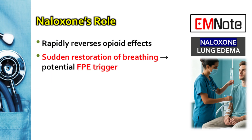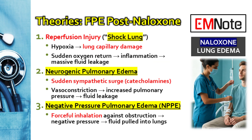So what's the trigger? The current thinking is that it's the sudden reversal of the opioid's effects. There are three main theories about the mechanism. The first theory, and it's the leading one, is reperfusion injury. During the overdose, the lung tissue is already damaged because it's starved of oxygen. Then, when naloxone kicks in and breathing is restored, you get this sudden rush of oxygenated blood back into that damaged tissue. This can set off a huge inflammatory response, which makes those leaky capillaries dump fluid into the alveoli.